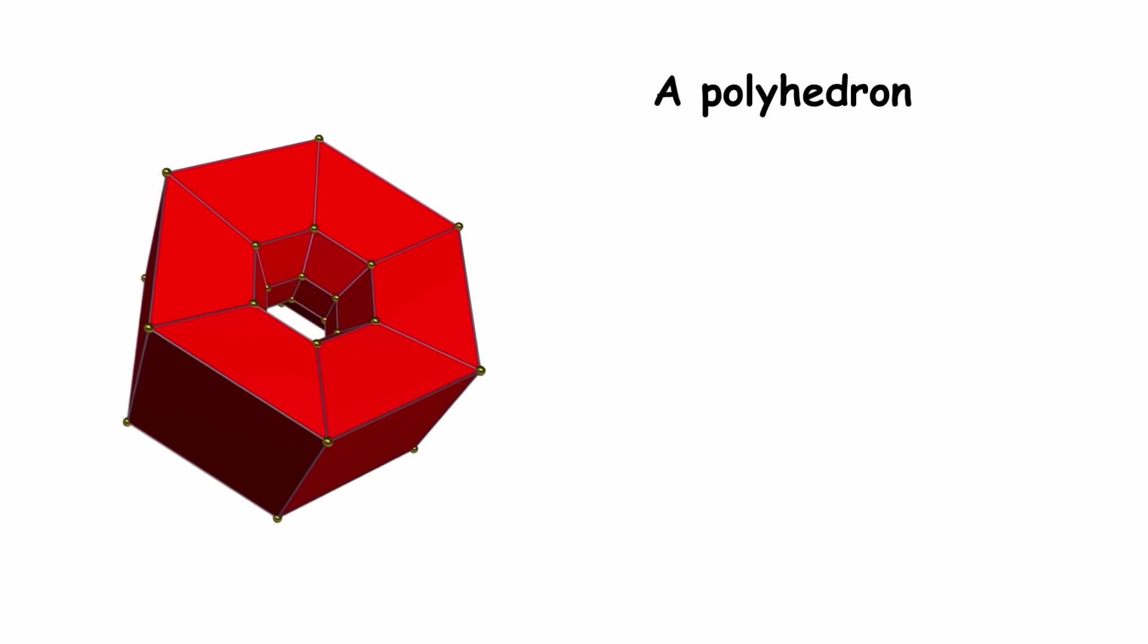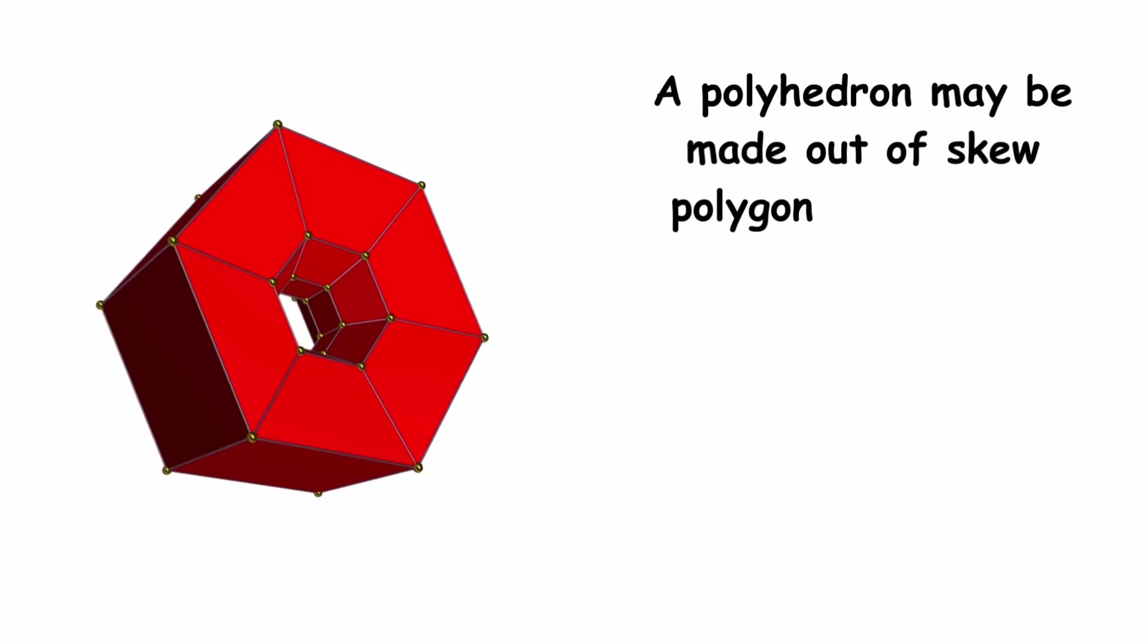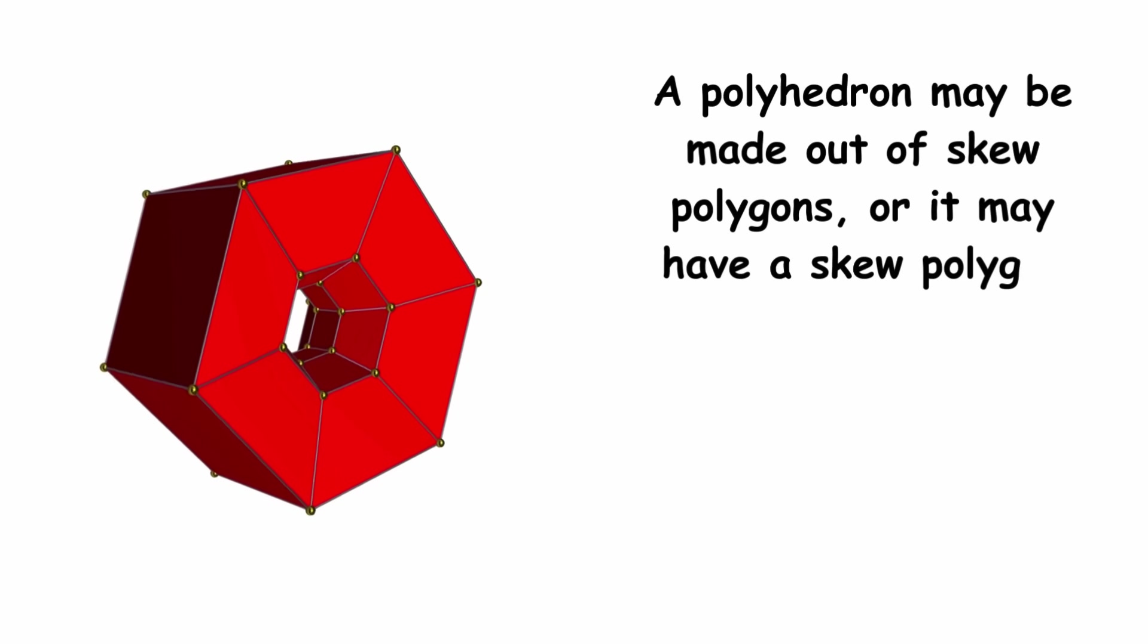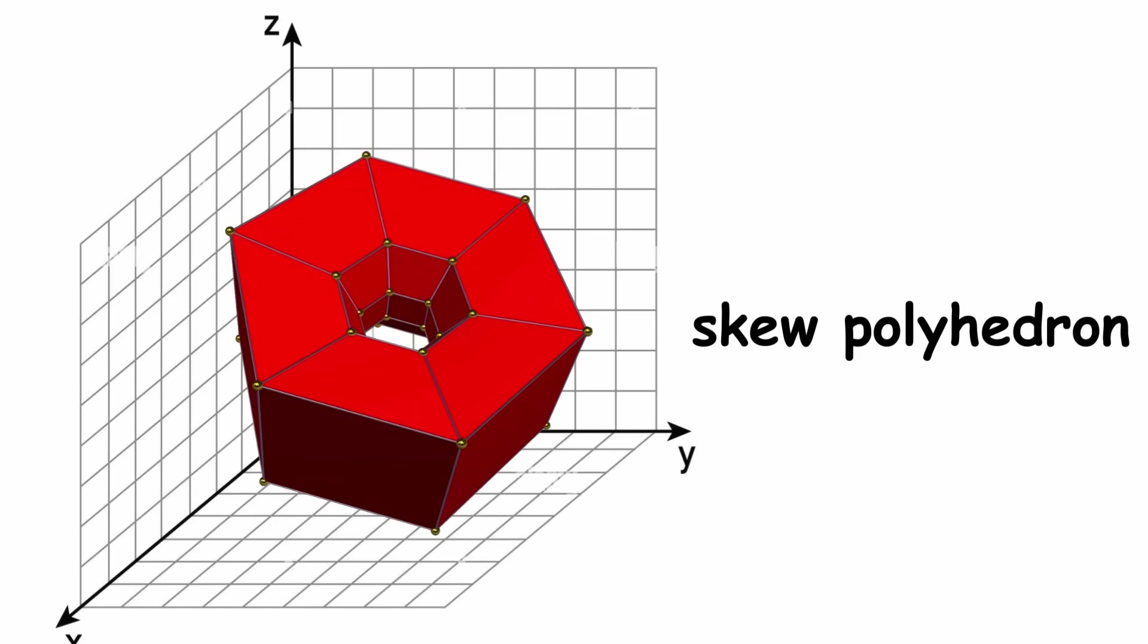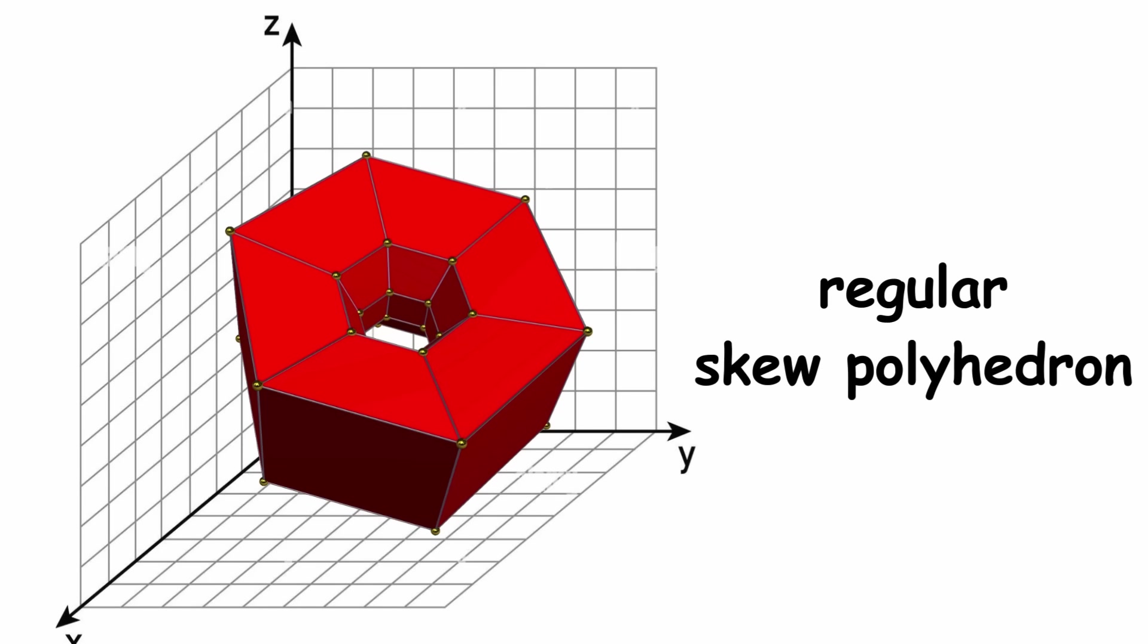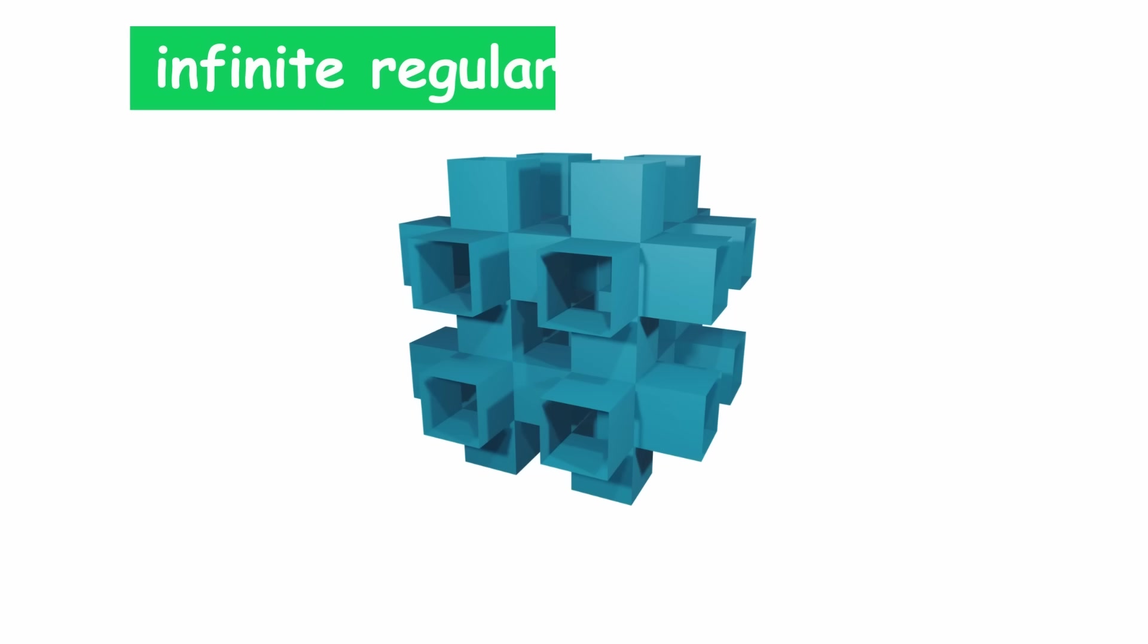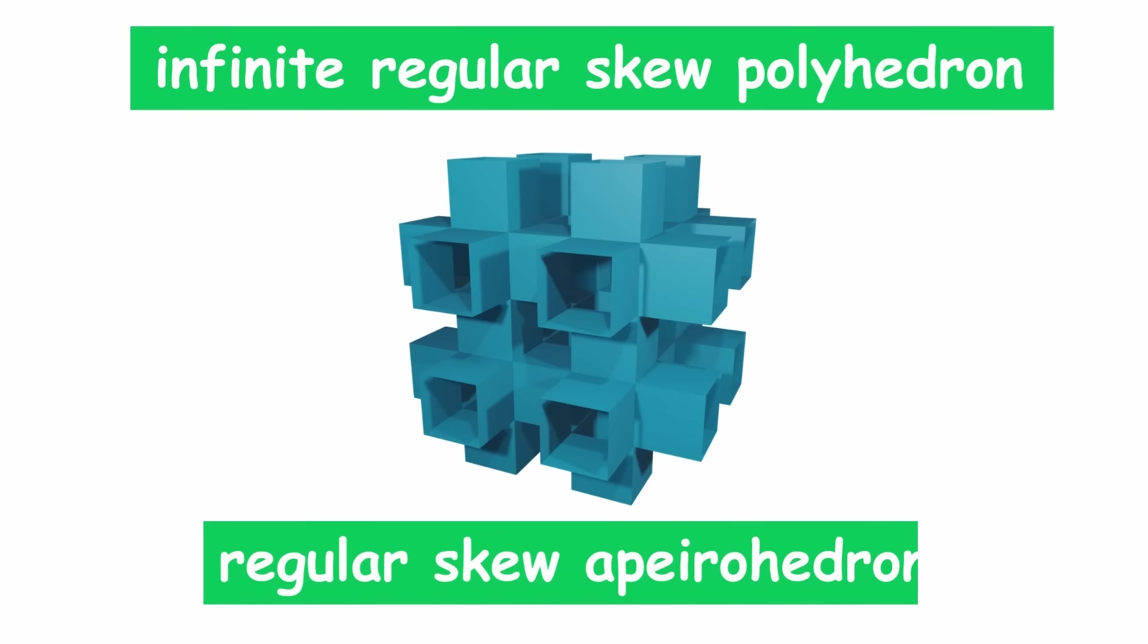A polyhedron may be made out of skew polygons, or it may have a skew polygon as a vertex figure. In that case, it is called a skew polyhedron. In particular, it is called a regular skew polyhedron if the skew polygons in question are regular. An infinite regular skew polyhedron is called a regular skew apirahedron.